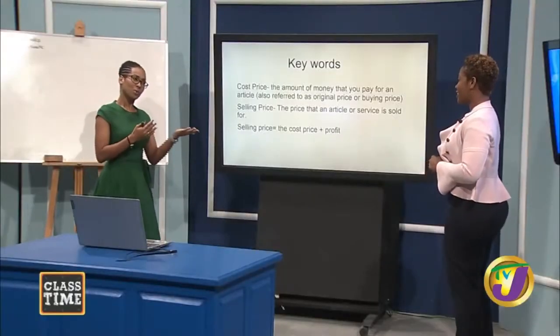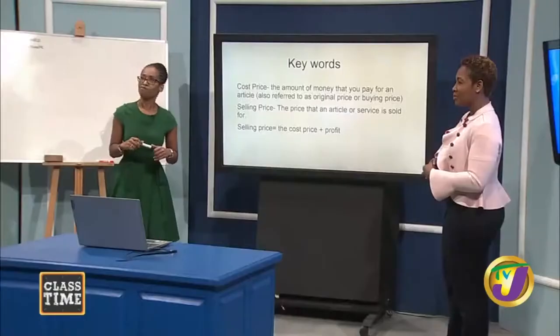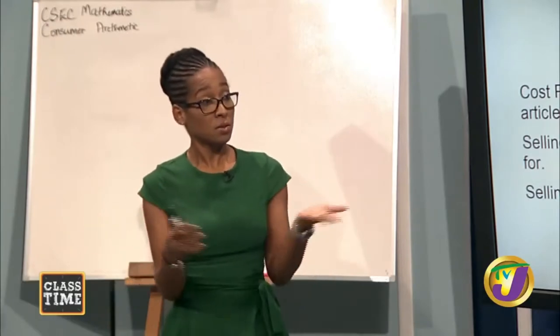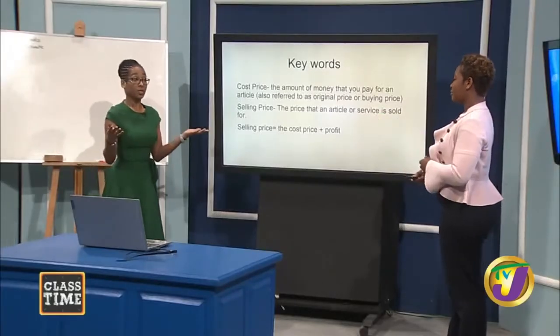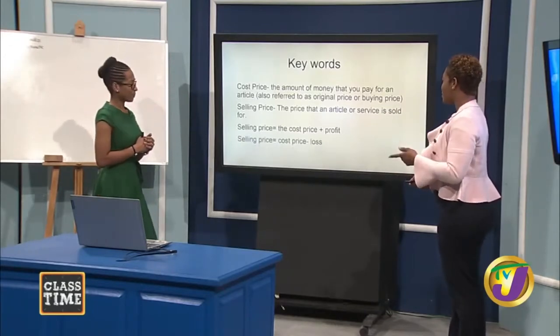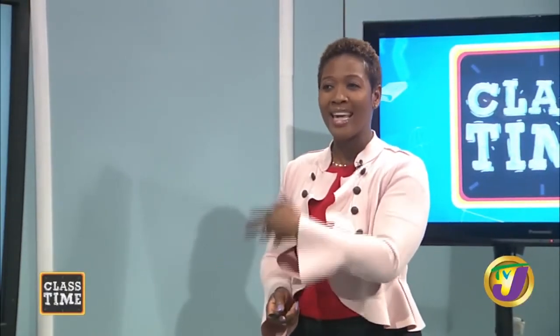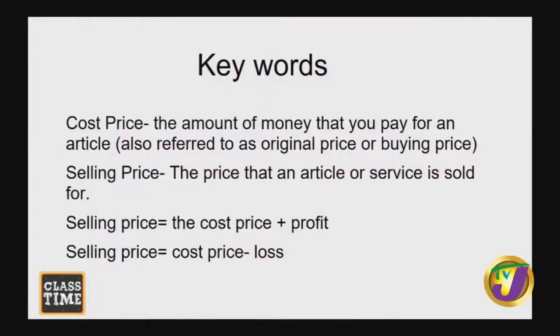There is a relationship between cost price and selling price. The selling price could be the cost price plus the profit. But not every business makes a profit — sometimes businesses close down and sell out. There are times when the selling price includes a loss: the cost price subtract a loss still gives a selling price.